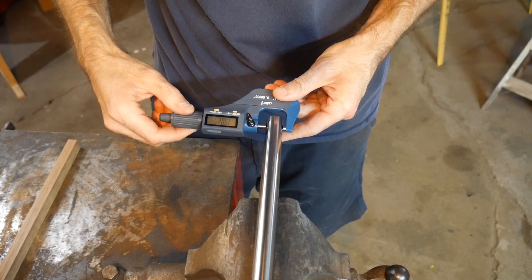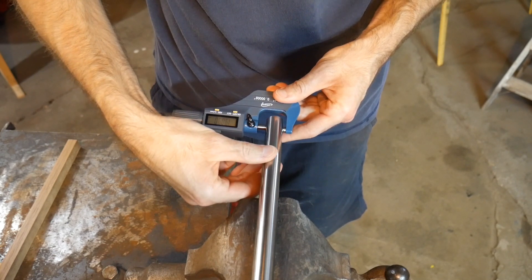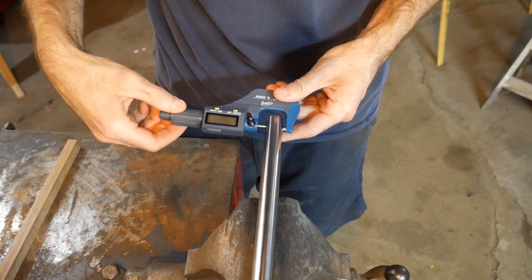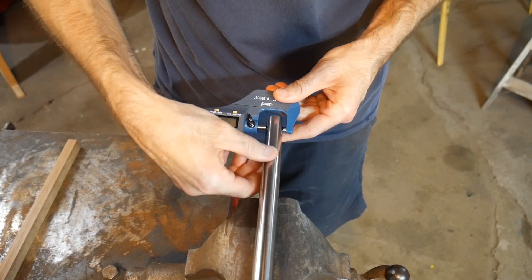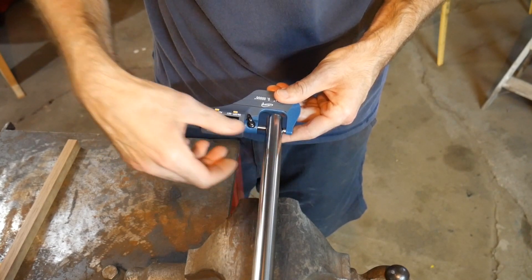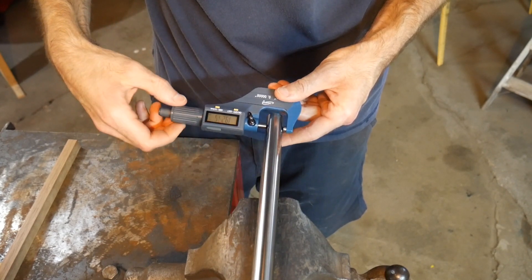And we've got 19.025. So that's our nominal number, do a little rotation, 0.25, 0.24, 0.25. So I'm feeling pretty good about the diameter consistency of this shaft.